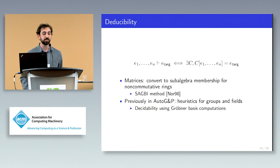In AutoGNP, the corresponding deducibility problems for groups and fields were solved heuristically. In our work, we resolved this by proving that both problems are decidable by reducing to Gröbner bases computations. This decidability result is in contrast to the algorithm for matrices, which has only been proven semi-decidable. However, we don't consider this a problem because all deducibility problems we will find in our proofs will be very small.